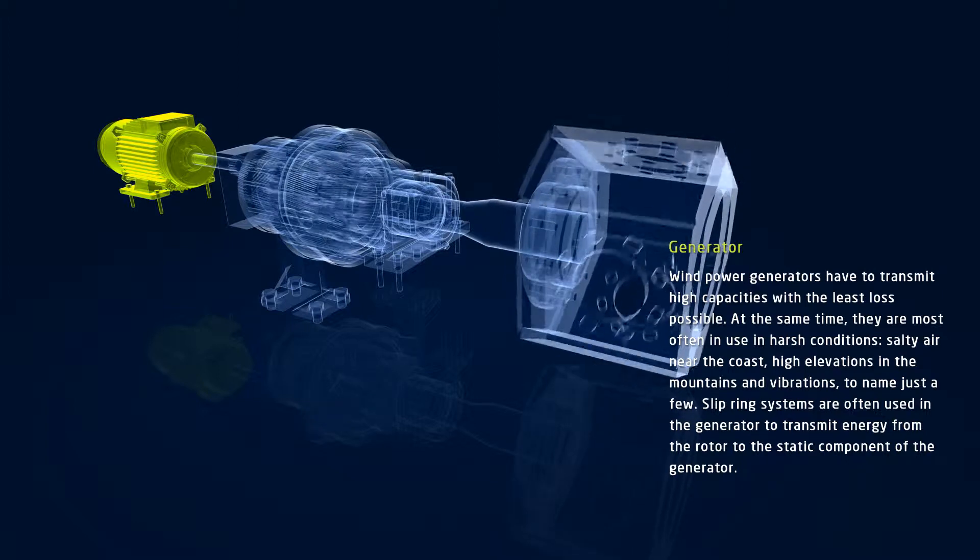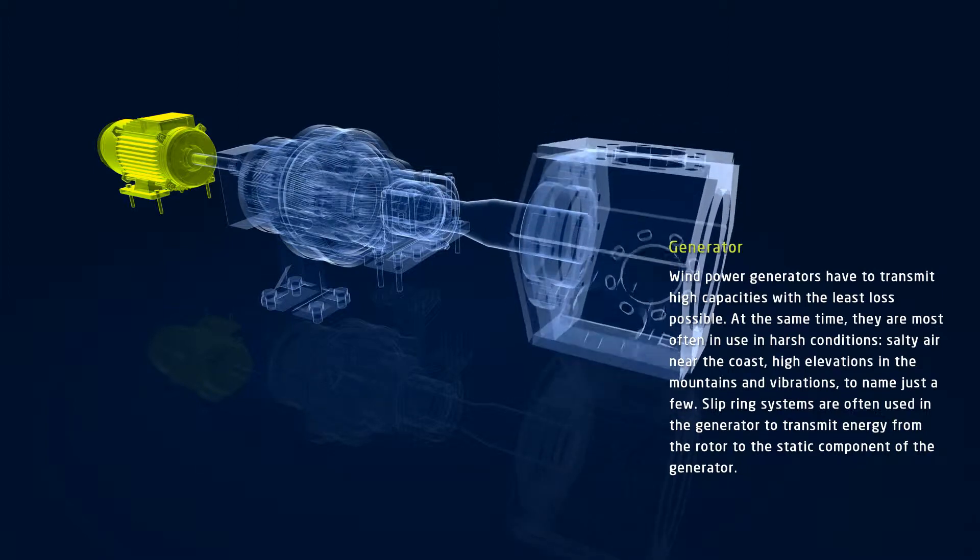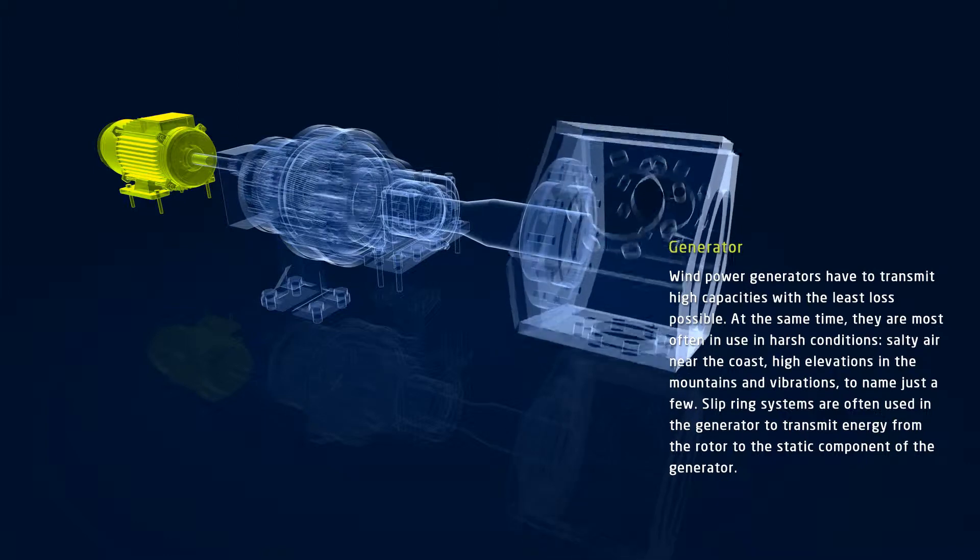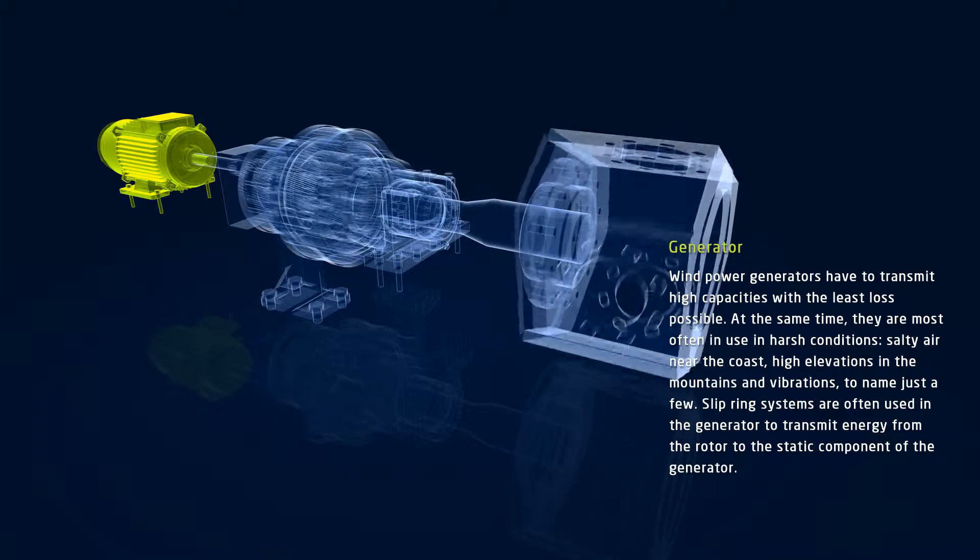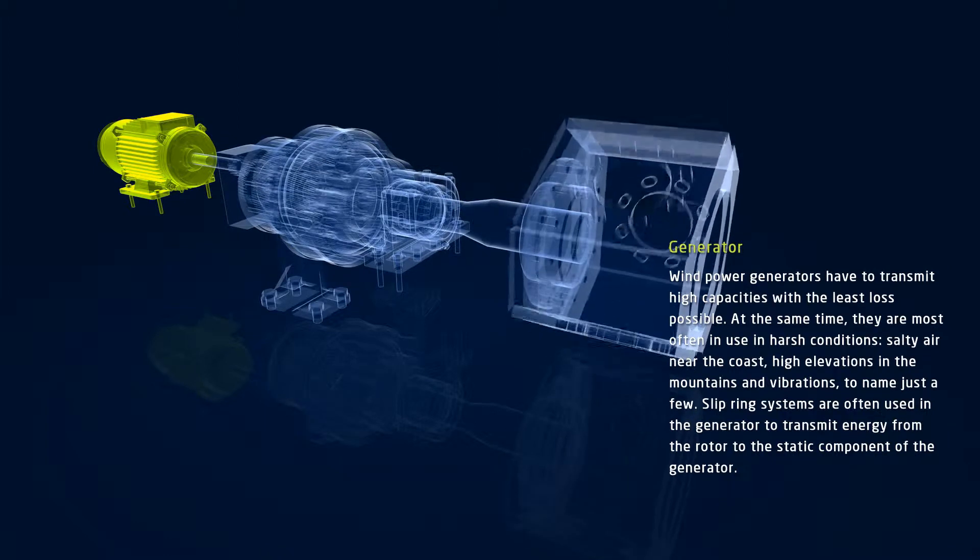Slip ring units are often used in generators to transmit energy from the rotor to the static component of the generator. For this reason, the slip rings are especially important.